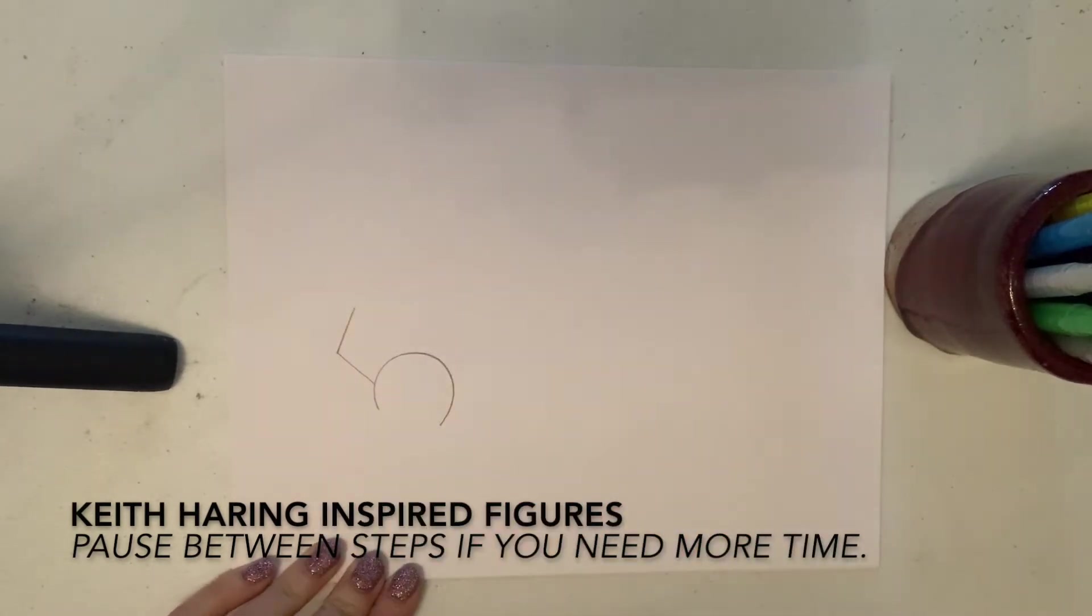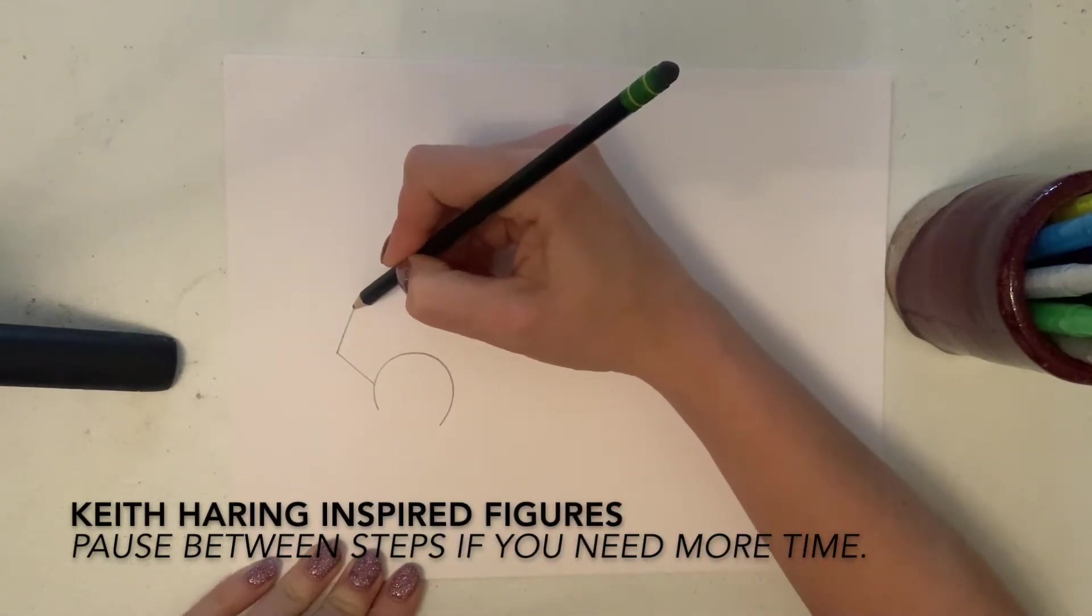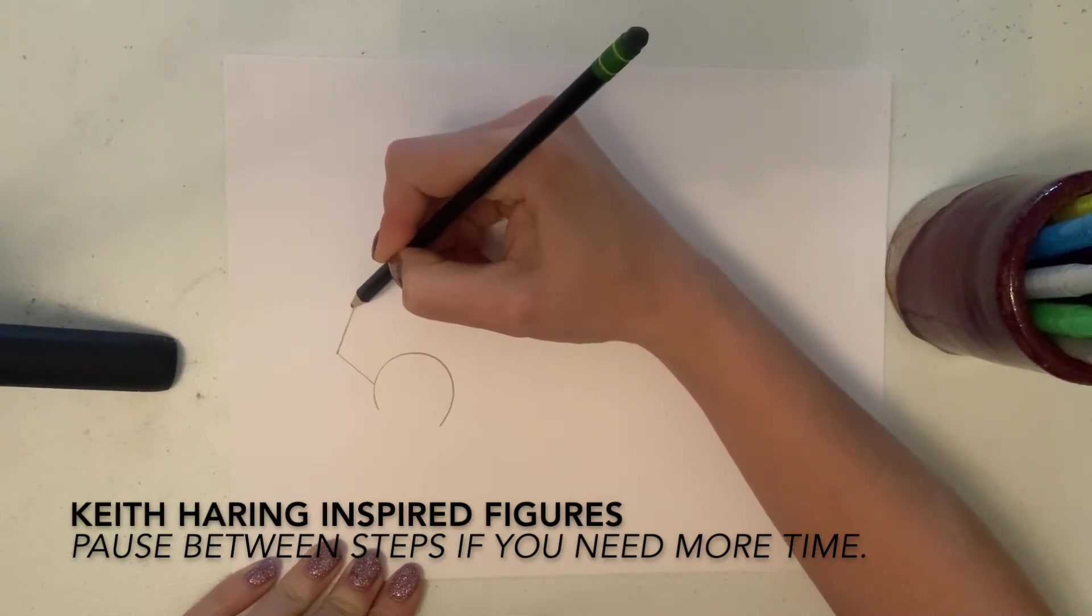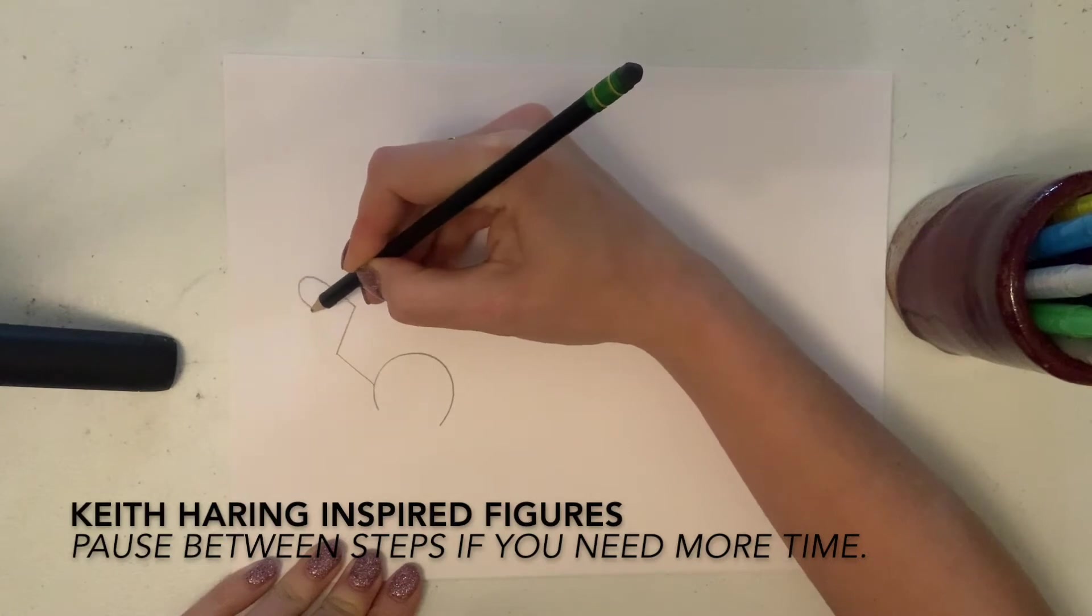Now we're going to draw the hand as if it's folded back. So we're going to start at the end of the wrist and we're going to draw out and curve back around.